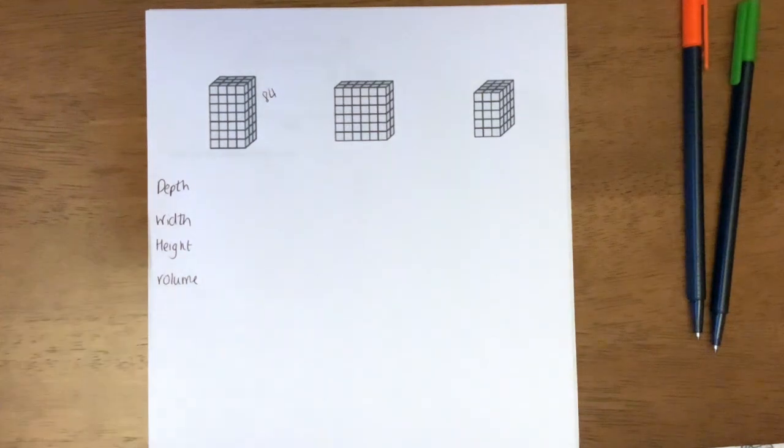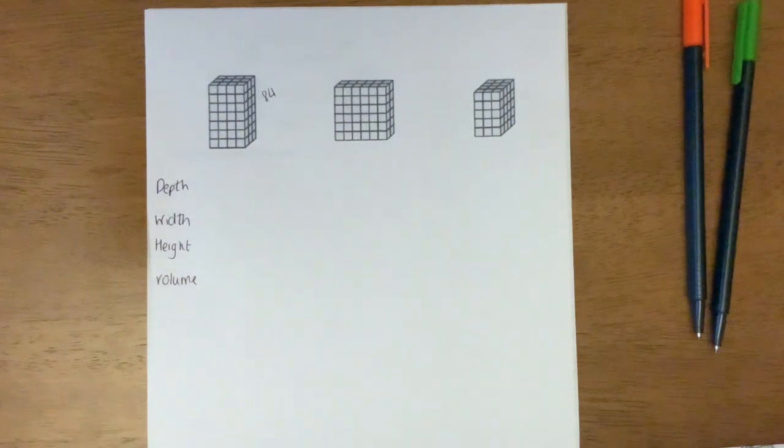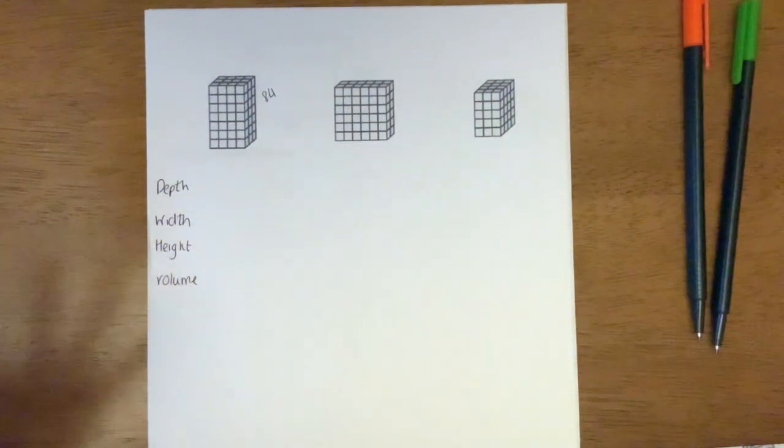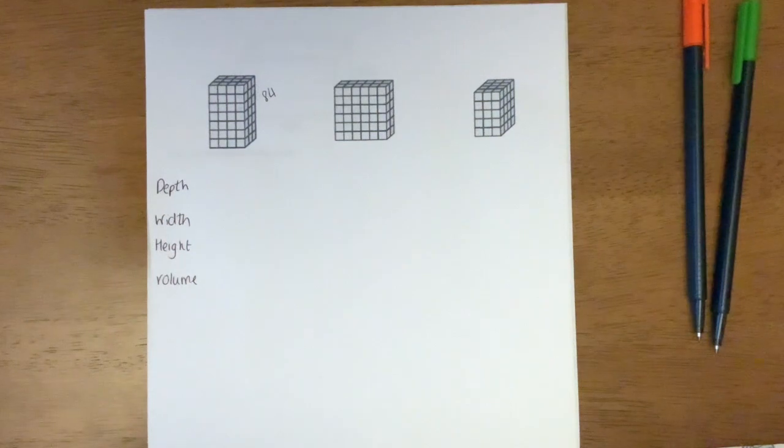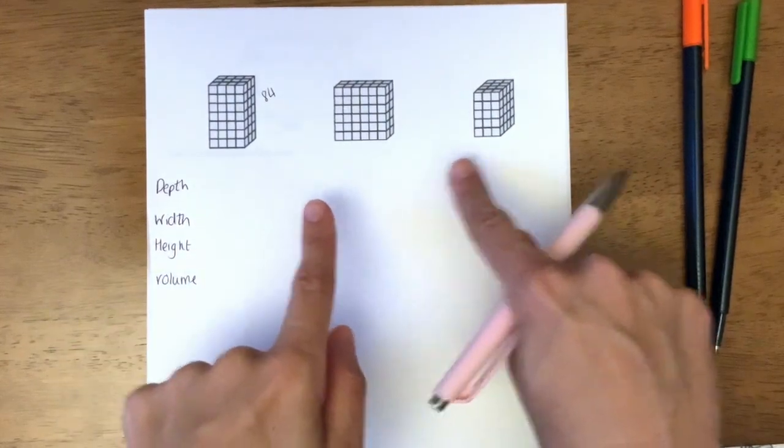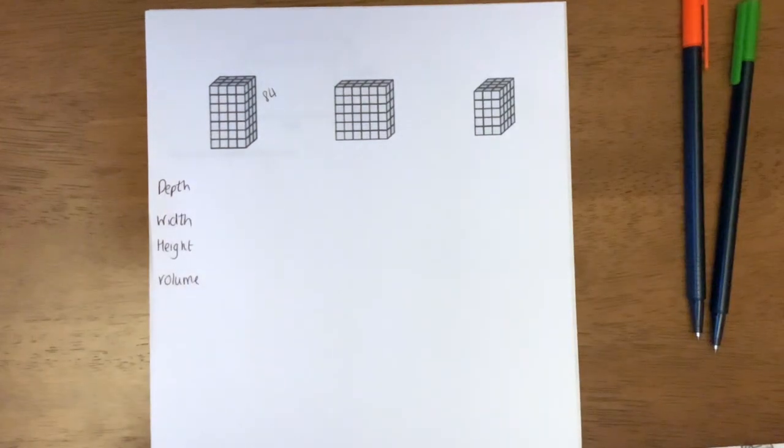We're going to do it slightly differently, like we've done with area where we were counting the squares, but we're still writing down the dimensions to help us do questions when there aren't any squares. This is set up on the slideshow with depth, width, height, and volume. I've done it this way so I can do all three for you, and you're going to set it up the same way to understand how to work out the volume.